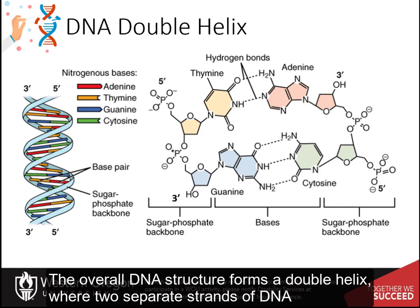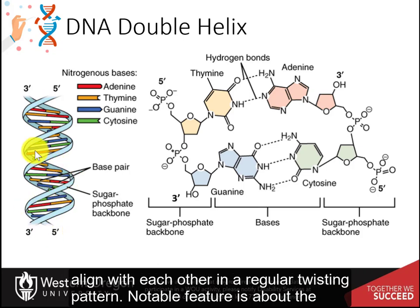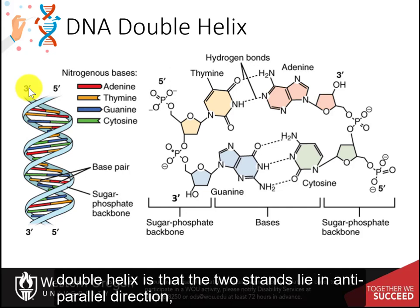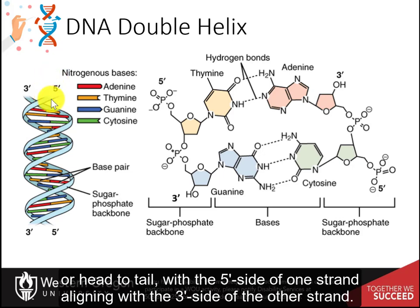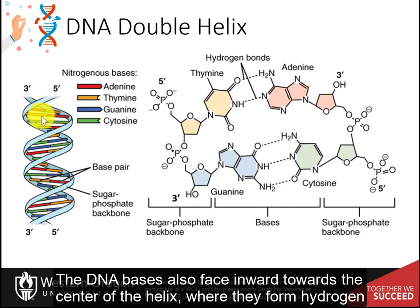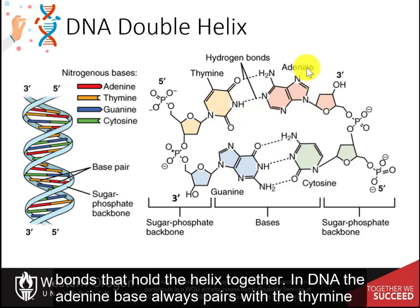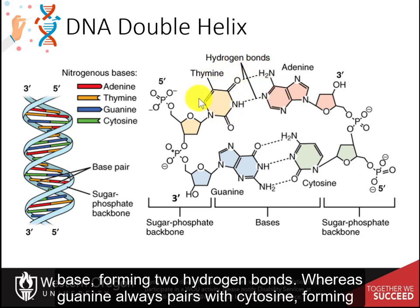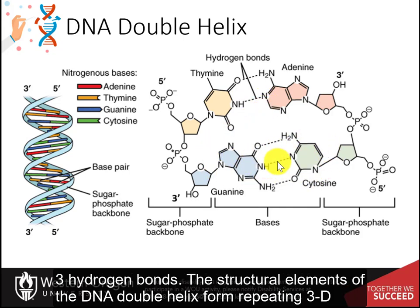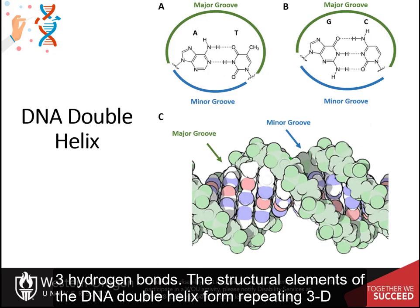The overall DNA structure forms a double helix, where two separate strands of DNA align in a regular twisting pattern. The two strands lie in an anti-parallel direction, or head to tail, with the 5' side of one strand aligning with the 3' side of the other. The DNA bases face inward toward the center of the helix, where they form hydrogen bonds that hold the helix together. In DNA, adenine always pairs with thymine, forming two hydrogen bonds, whereas guanine always pairs with cytosine, forming three hydrogen bonds.